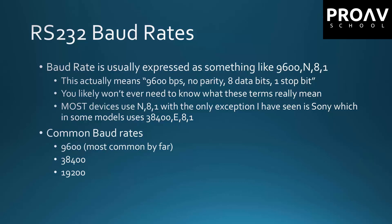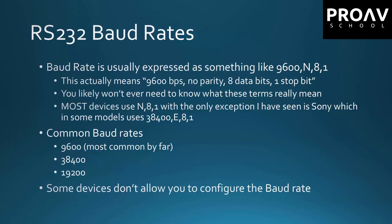Some of the common baud rates: 9600 is by far the most common. I've also seen a lot of 38,400 and 19,200. Some devices don't let you configure the baud rate, so it has to be a certain way. Other devices like projectors and monitors sometimes let you set different baud rates. The programmer will configure in their program what baud rate it's supposed to be at — that's not something you can typically change at runtime — and the devices will have to match that.